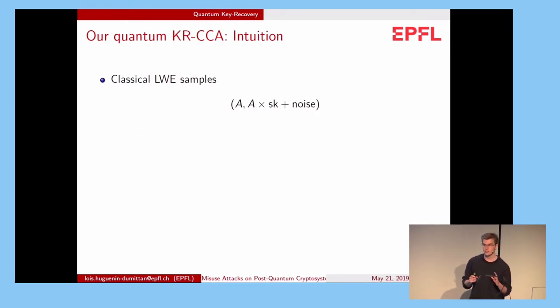As you know, classical learning with error samples looks like this, with a couple of values a and a times some secret plus the noise. And the goal of the problem is to find the secret key given several of these samples.